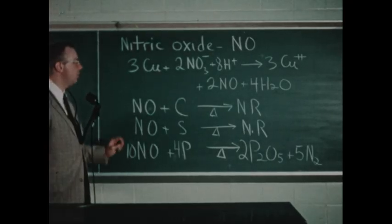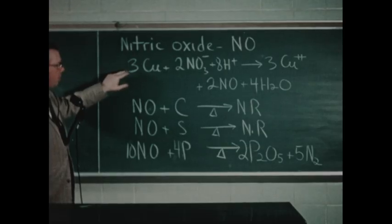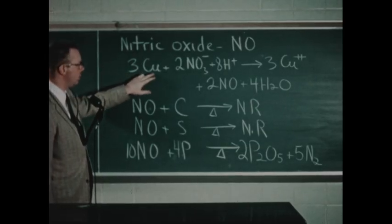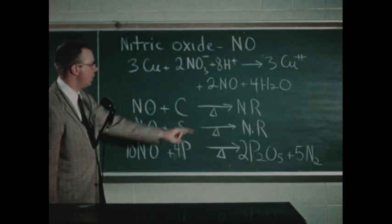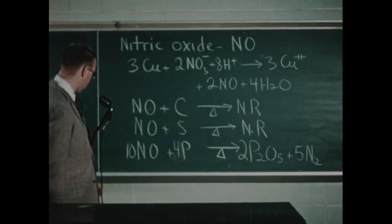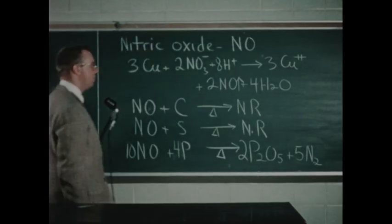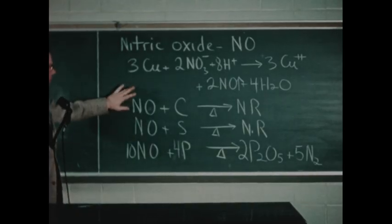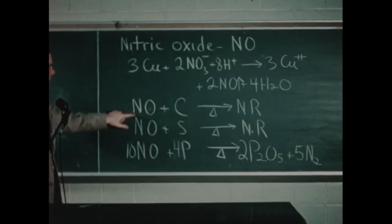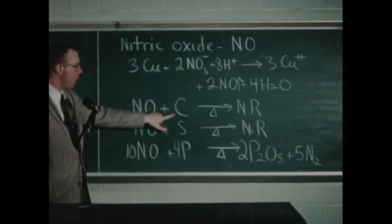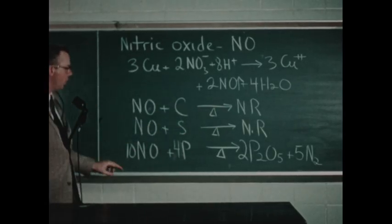The equations involved in the nitric oxide experiment are as follows. First, we prepared nitric oxide by the oxidation-reduction reaction between copper and dilute nitric acid, yielding copper ion and nitric oxide. This gas was evolved rapidly by the reaction. Next, after testing the solubility of nitric oxide in water, we saw that this material is so stable that burning carbon does not react with it, nor does burning sulfur.